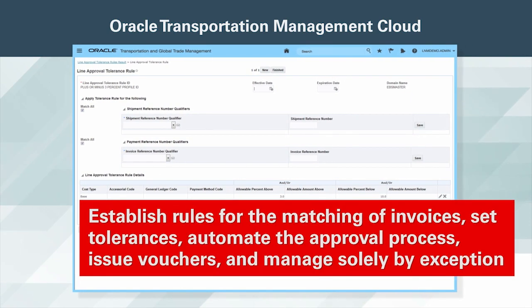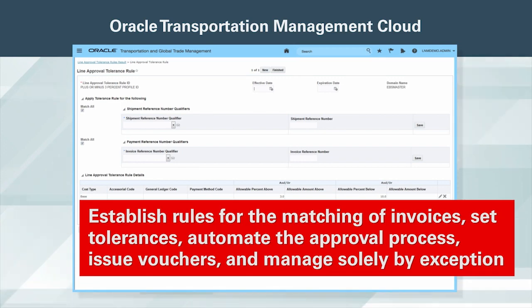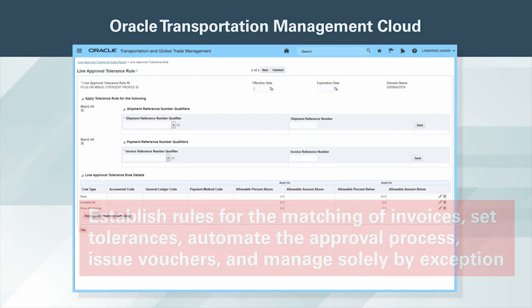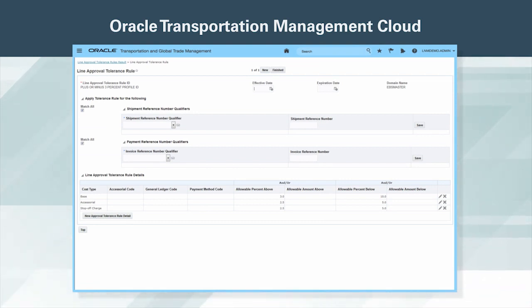Establish rules for matching of invoices, set tolerances, automate the approval process, issue vouchers, and manage solely by exception. Elimination of errors incurred through manual auditing of freight invoices can mean significant savings, and automation can free your employees to take on more value-add projects.